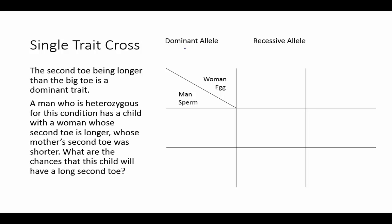Welcome to Punnett Squares Example 1, Single Trait Cross. The second toe being longer than the big toe is a dominant trait. So let's look at our possible alleles. I'm going to choose the letter T because we're talking about toes.